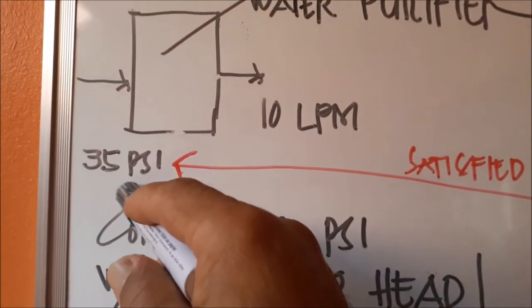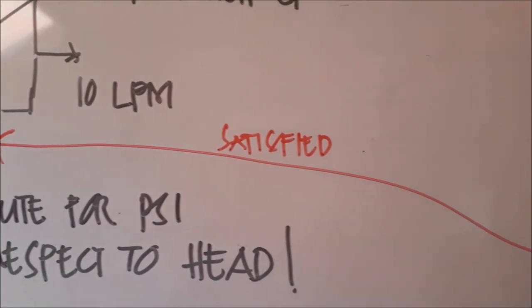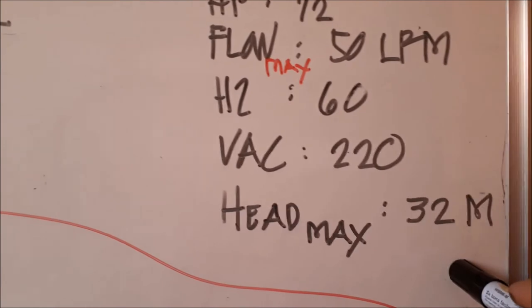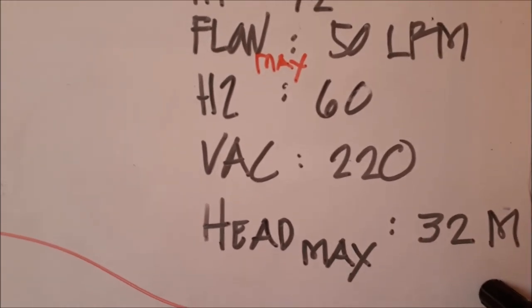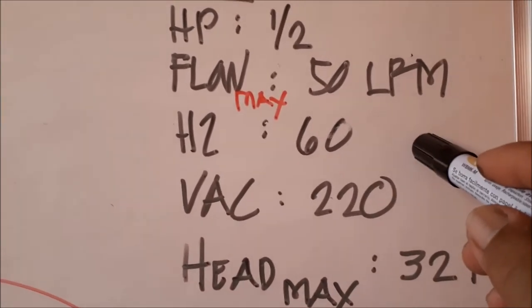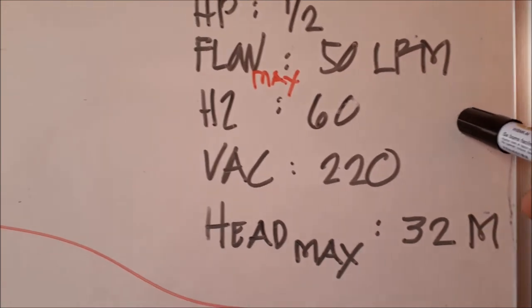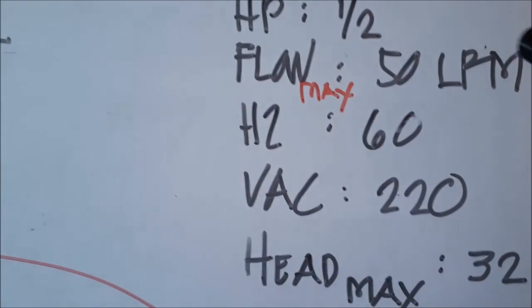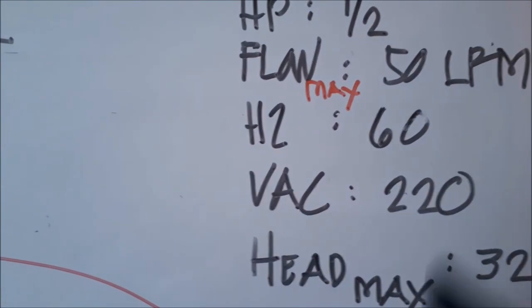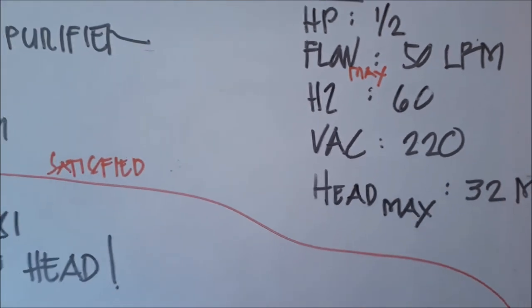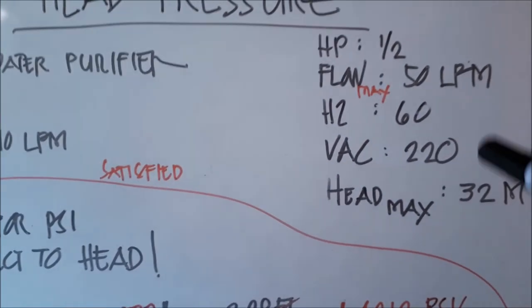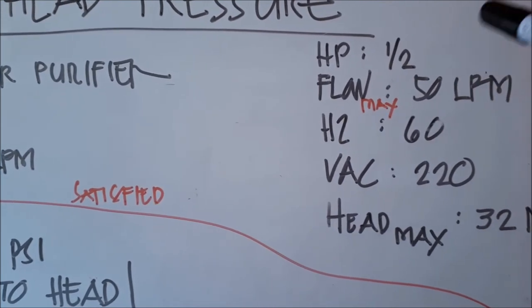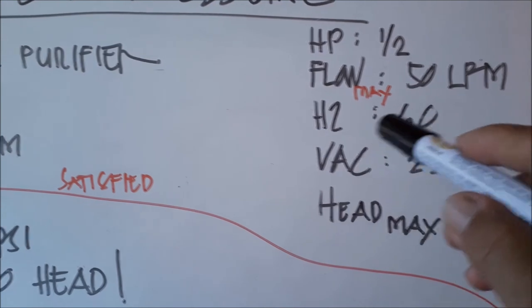What we'll choose is 32 meter head pump specification, maximum head. Its maximum flow is 50 liters per minute. We don't need to get a higher power rating, let's say 3/4. Just one-half is what we'll choose. That's our answer for King TV - one-half horsepower pump rating, the power rating, and its maximum flow is 50.